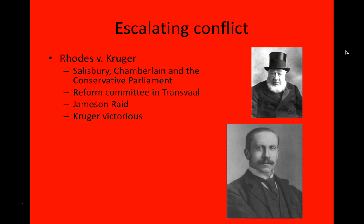With the backing of Chamberlain, Rhodes also formulated a plan together with a fellow named Leander Starr Jameson, a British official functioning in the Bechuanaland Protectorate. They came up with a plan that Jameson would lead a group of about 500 British soldiers on a raid into the Transvaal. Simultaneously, the reform committee in Johannesburg would rise up, seize control of that city, link up with Jameson, and they would attack Pretoria and force Kruger to capitulate and accept British rule. This was put into effect in 1896.